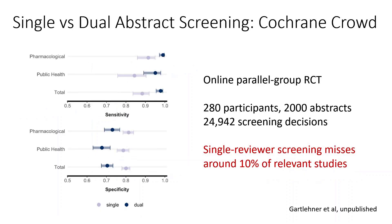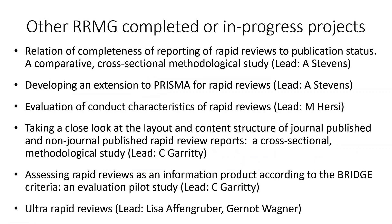The second methods project was a randomized trial comparing single with dual abstract screening using Cochrane Crowd, and found that a single reviewer screening misses about 10% of the studies — again relevant to consider for the rapid review process. Several other methods group projects are completed or underway, including looking at format, information packaging, and an extension of PRISMA for rapid reviews.